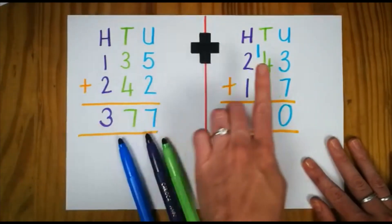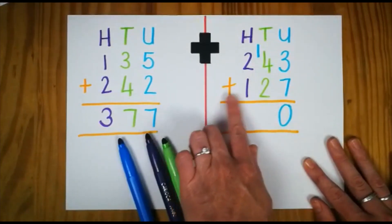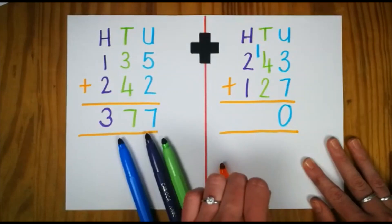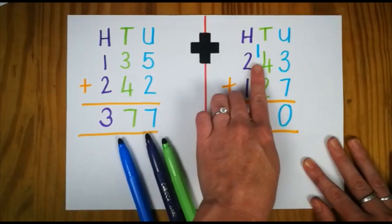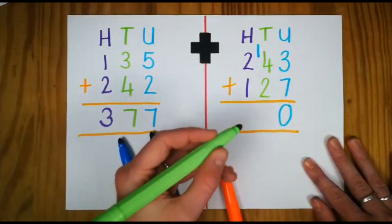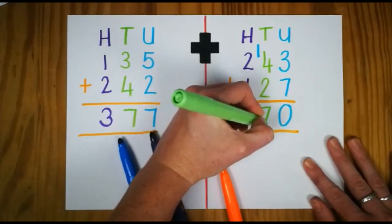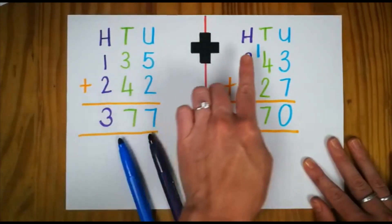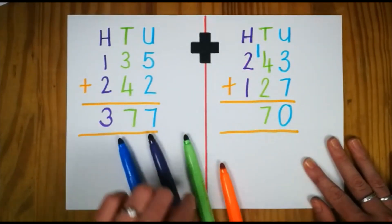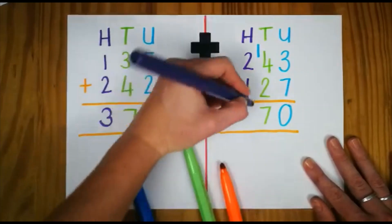So let's work on our tens. What is 4 plus 2? It's 6. But don't forget the 1. What is 6 plus 1? 7. And let's do our hundreds. 2 plus 1. 3.